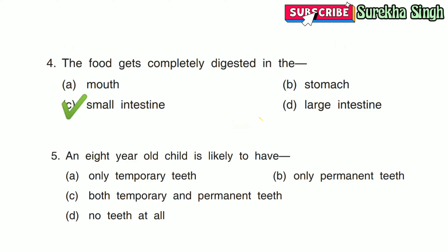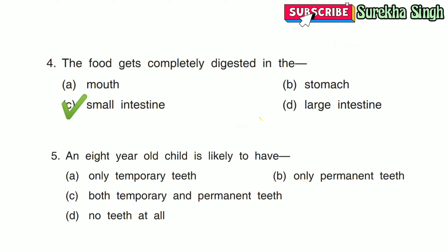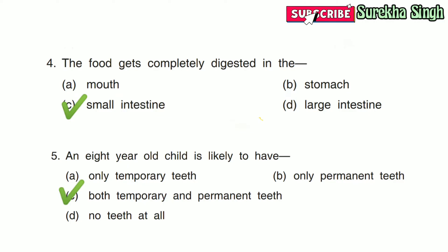5. An 8-year-old child is likely to have: Option A — Only temporary teeth, Option B — Only permanent teeth, Option C — Both temporary and permanent teeth, Option D — No teeth at all. Here Option C is correct. An 8-year-old child is likely to have both temporary and permanent teeth.